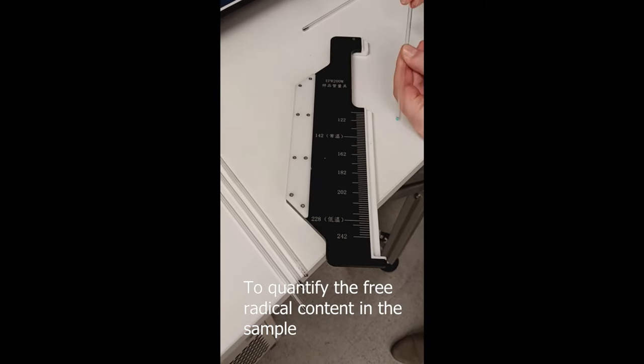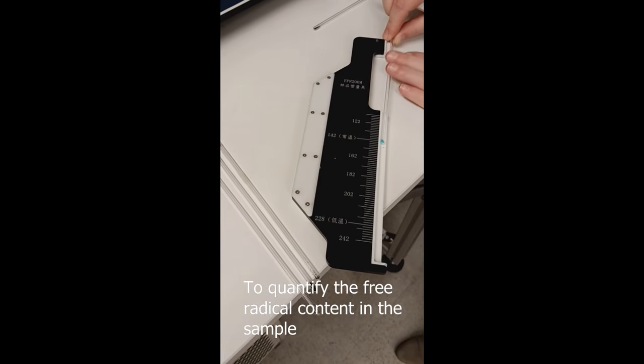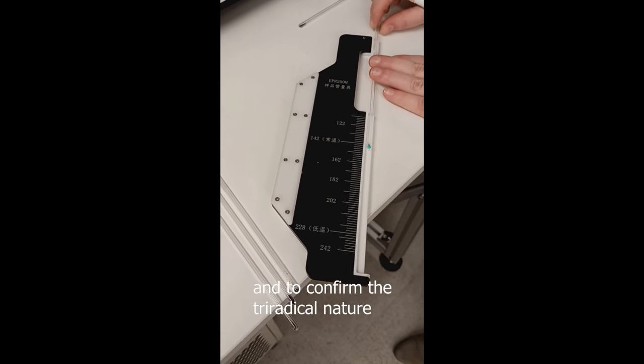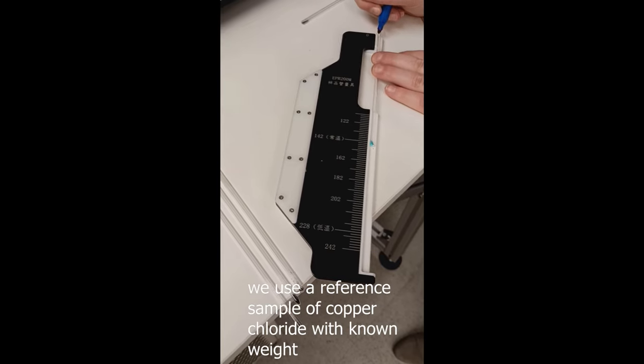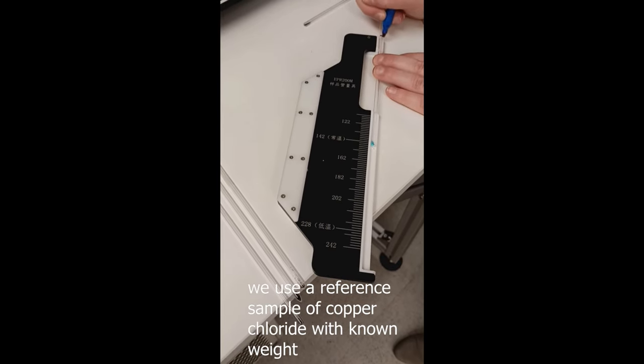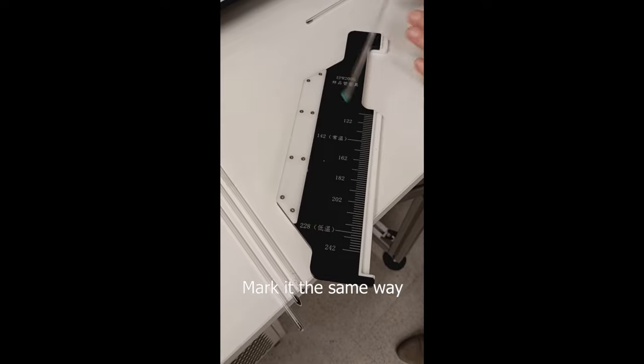To quantify the free radical content in the sample and to confirm the tri-radical nature, we use a reference sample of copper chloride with known weight. Mark it in the same way.